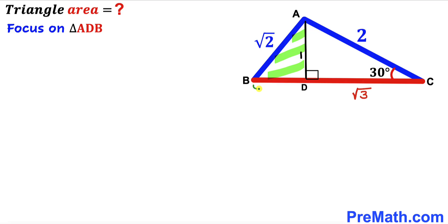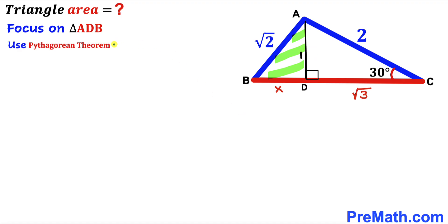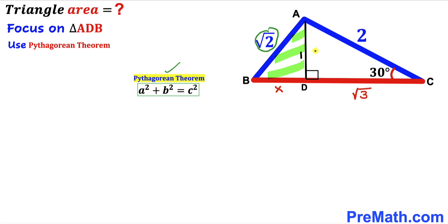I am going to label the segment BD as X and find its value. We can observe that the height AD of triangle ABC is 1 unit. We will apply the Pythagorean theorem to triangle ADB to solve for X. The theorem states: a² + b² = c², where the hypotenuse is square root of 2, and the two legs are X and 1.